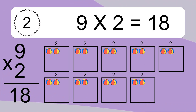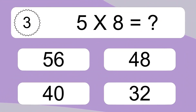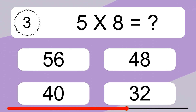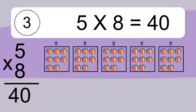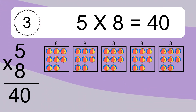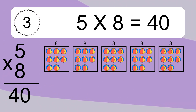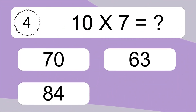5 times 8 equals what? We have 5 boxes, and each box has 8 colorful balls inside. If you count all the balls in all the boxes together, you will have 5 times 8 balls. This equals 40 balls.